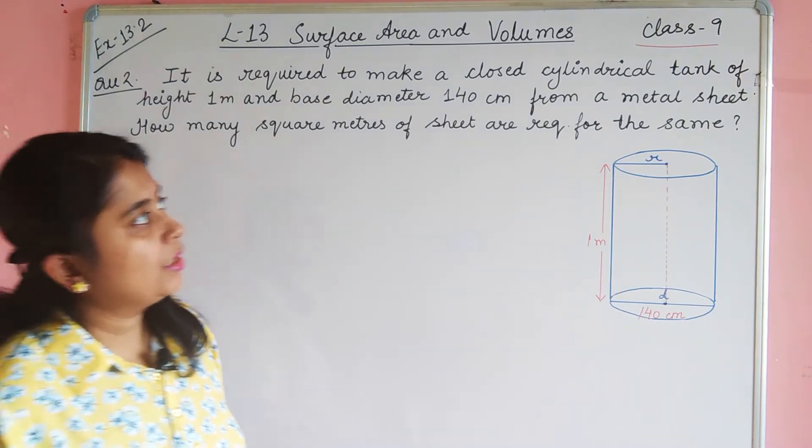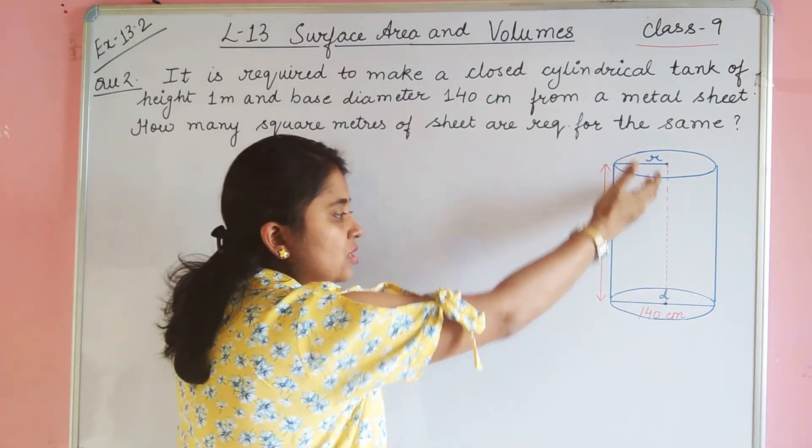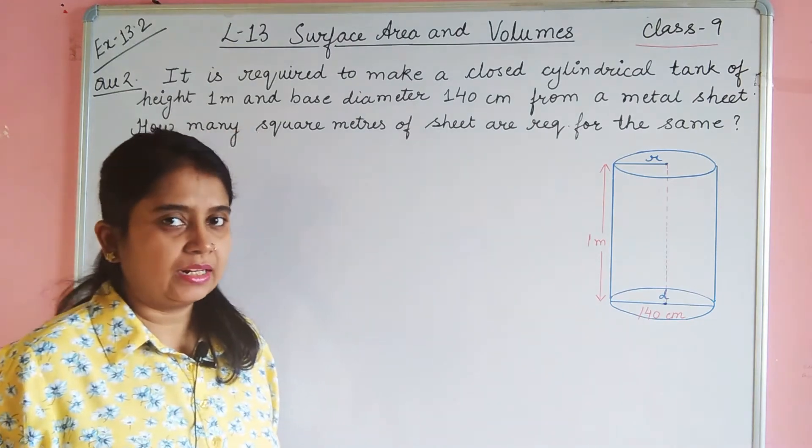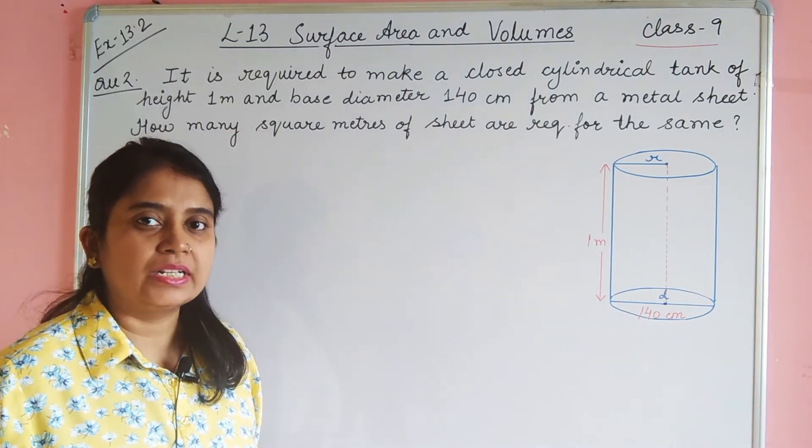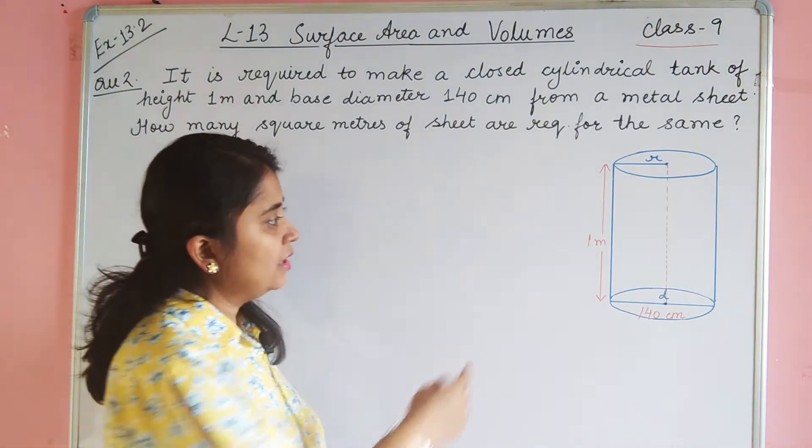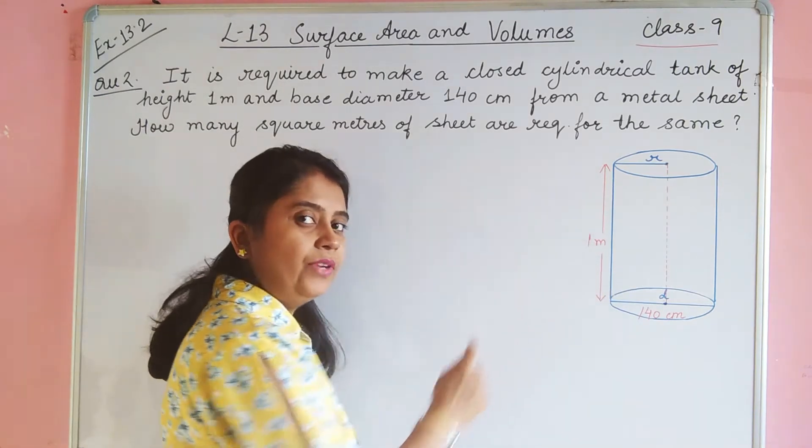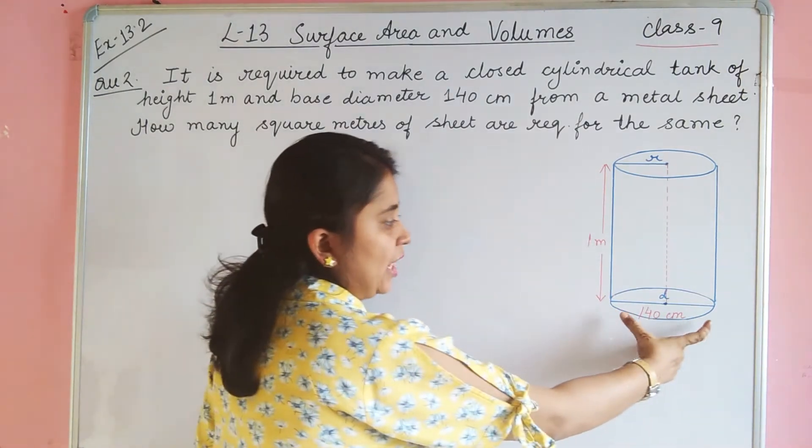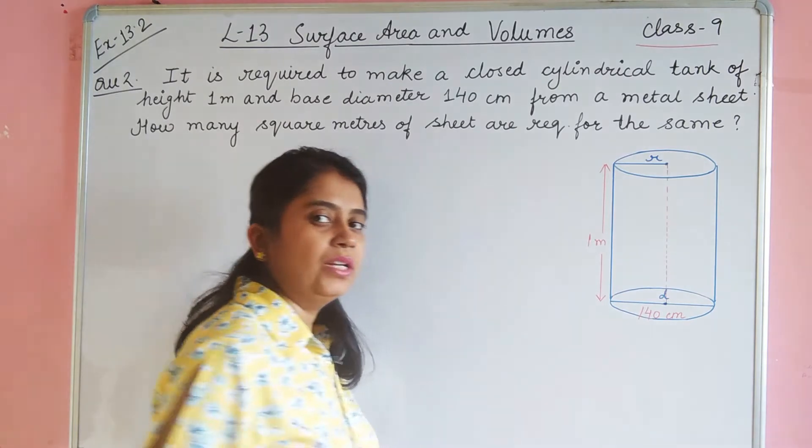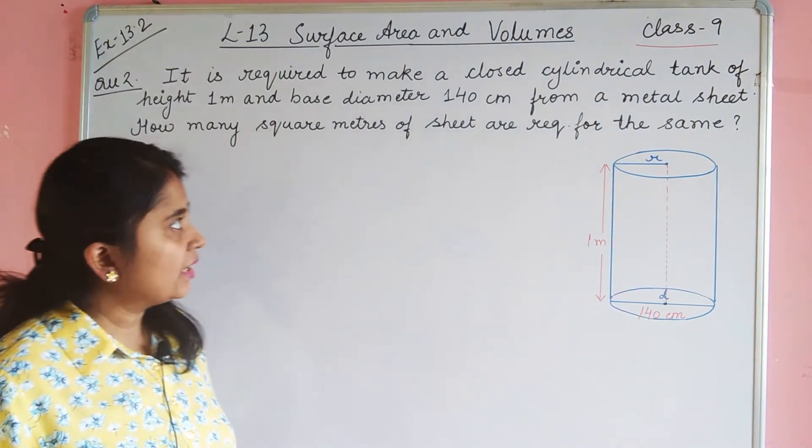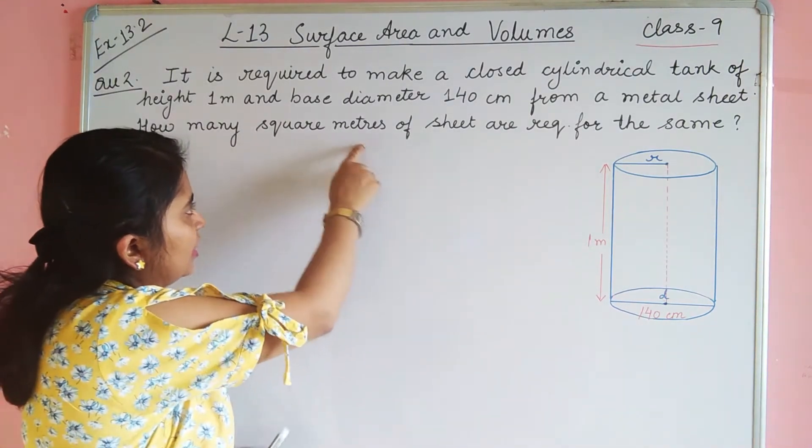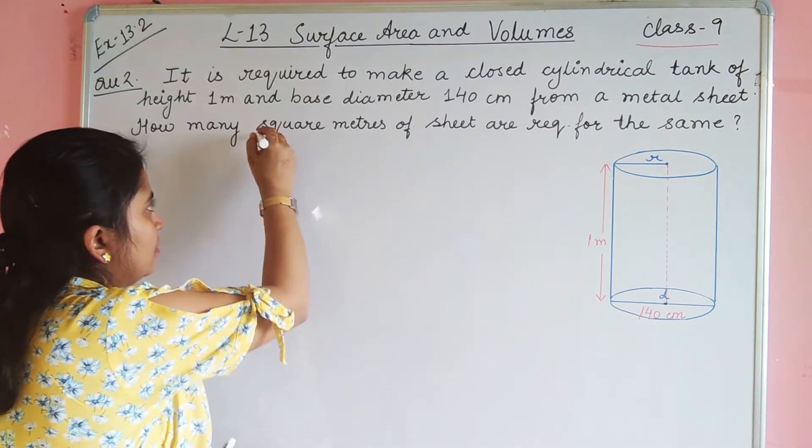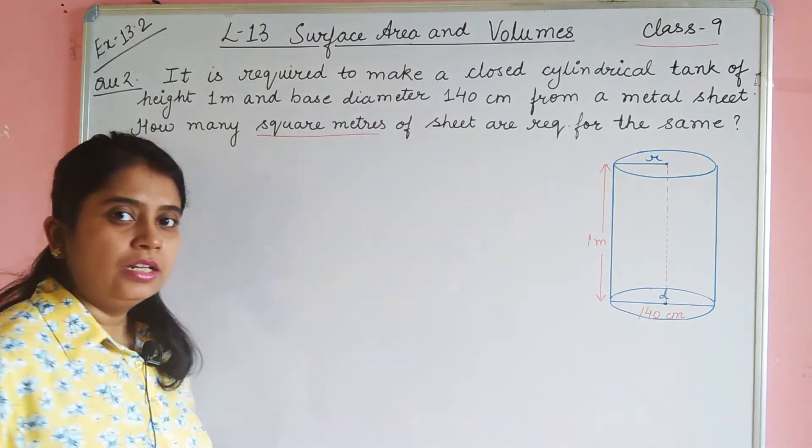The question is that we have to make a closed cylindrical tank with the help of a metal sheet. Metal sheet's height given is 1 meter and base diameter is 140 cm. So, we have to know how many square meters of sheet required.